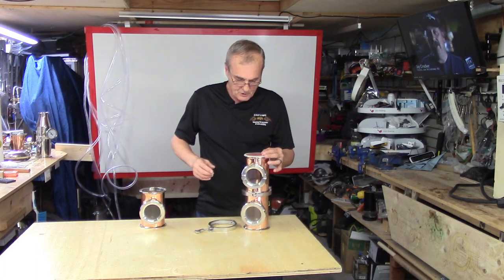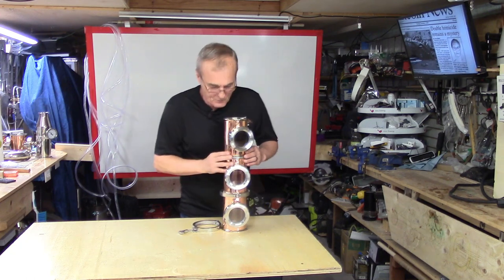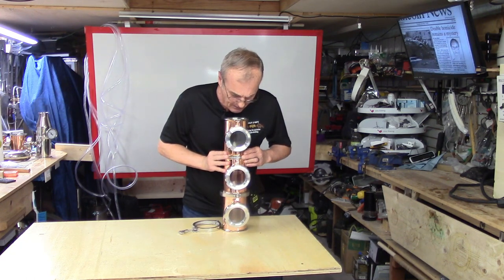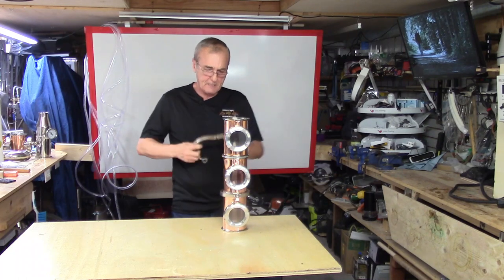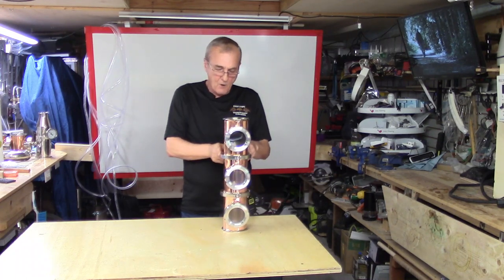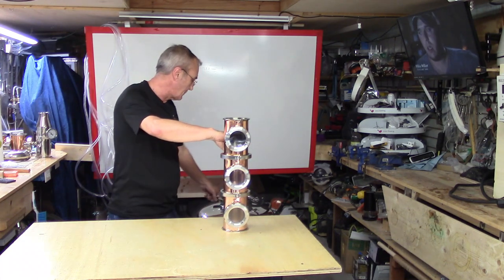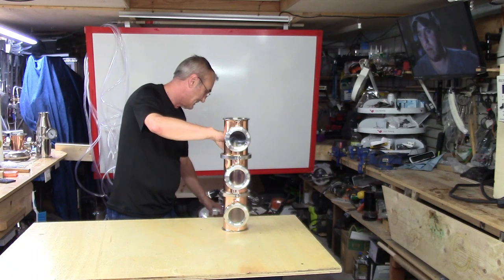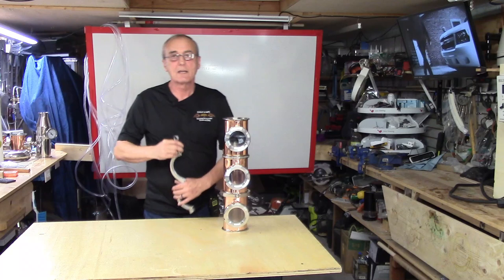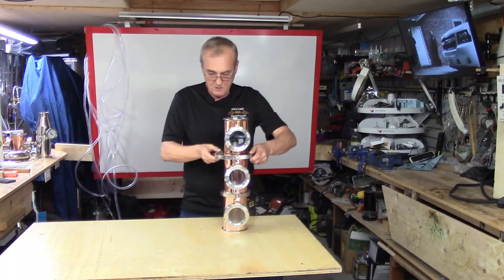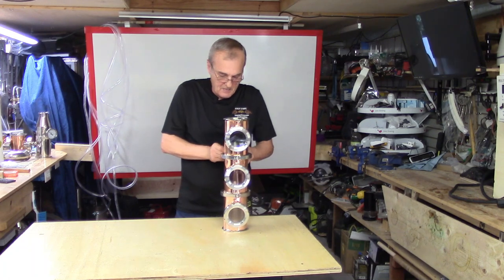So as I do that, you place that on there. I'm going to put this section of three together. Line them up because if you don't, it looks like ass when you're done. And I've already got the stills sitting here behind me, or the kettle. I've got probably 20 gallons, 21 gallons in there, just about full. It took me a little while to siphon everything in there.